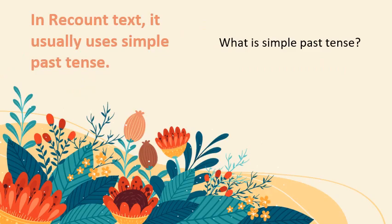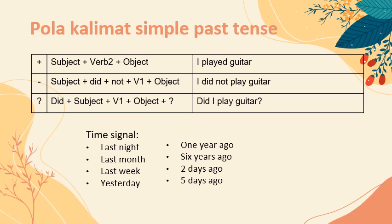In Recount Text, it usually uses simple past tense. Seperti yang telah saya jelaskan tadi, di dalam Recount Text menggunakan simple past tense. Simple past tense itu merupakan suatu kalimat yang digunakan ketika kita menceritakan sesuatu yang telah terjadi — kejadian di masa lalu. Untuk kalimat positif, polanya: Subject + Verb 2 + Object.